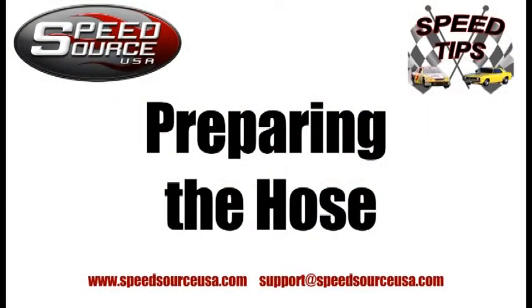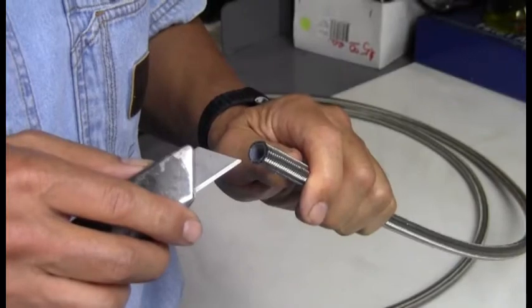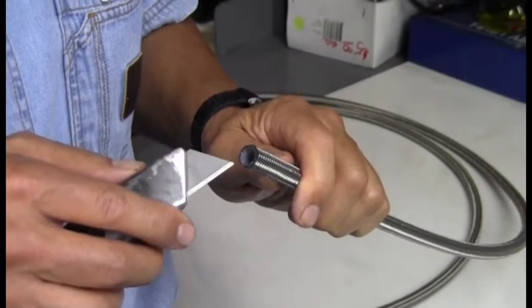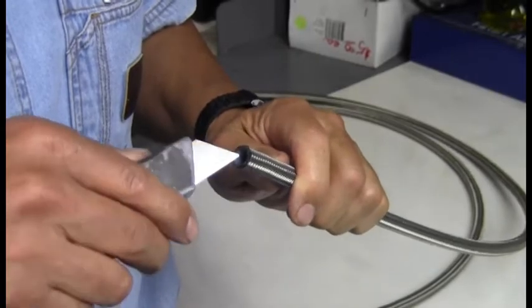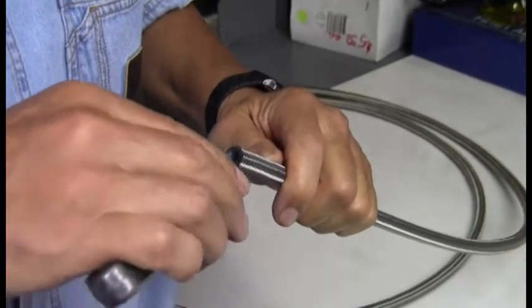We've already cut the hose, and a lot of times what will happen, depending on how you cut the hose, there will be a small Teflon burr in there, so take a sharp knife and lightly deburr that and remove that.